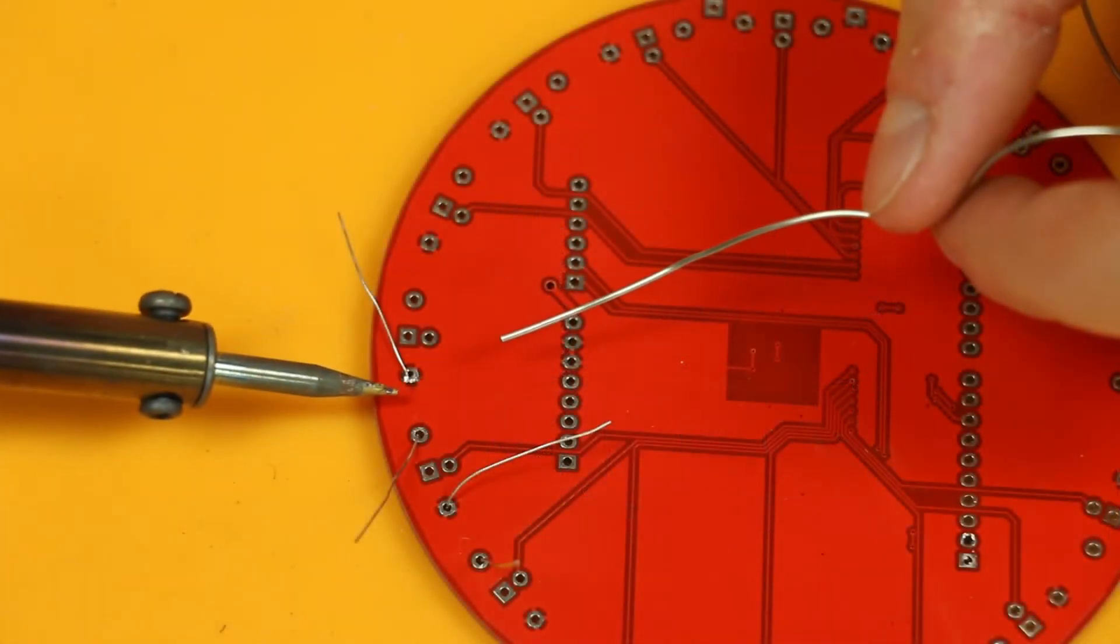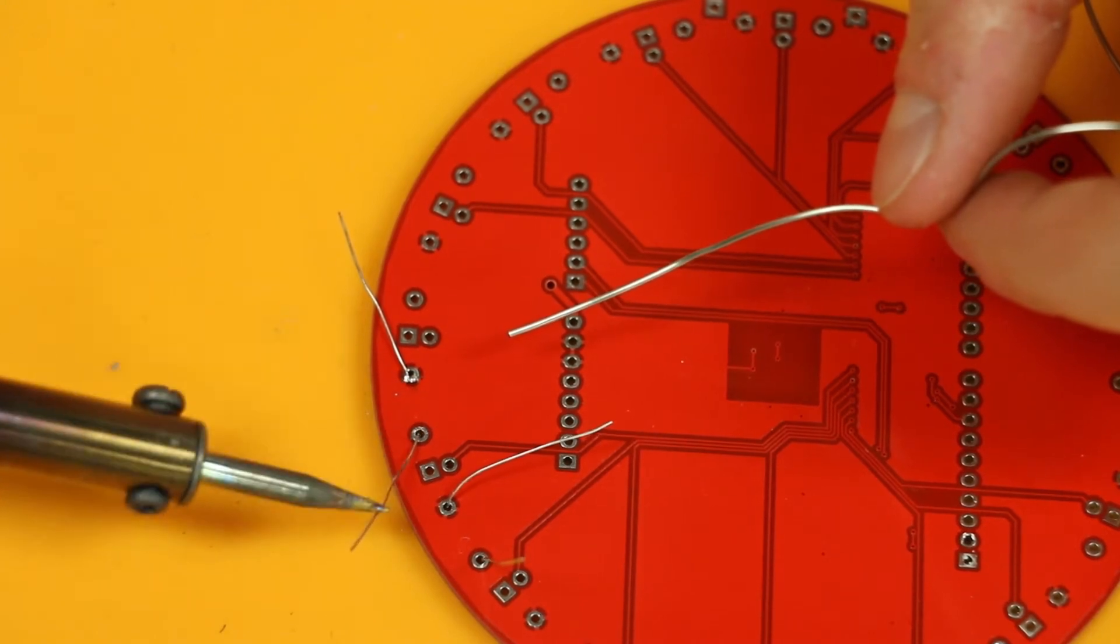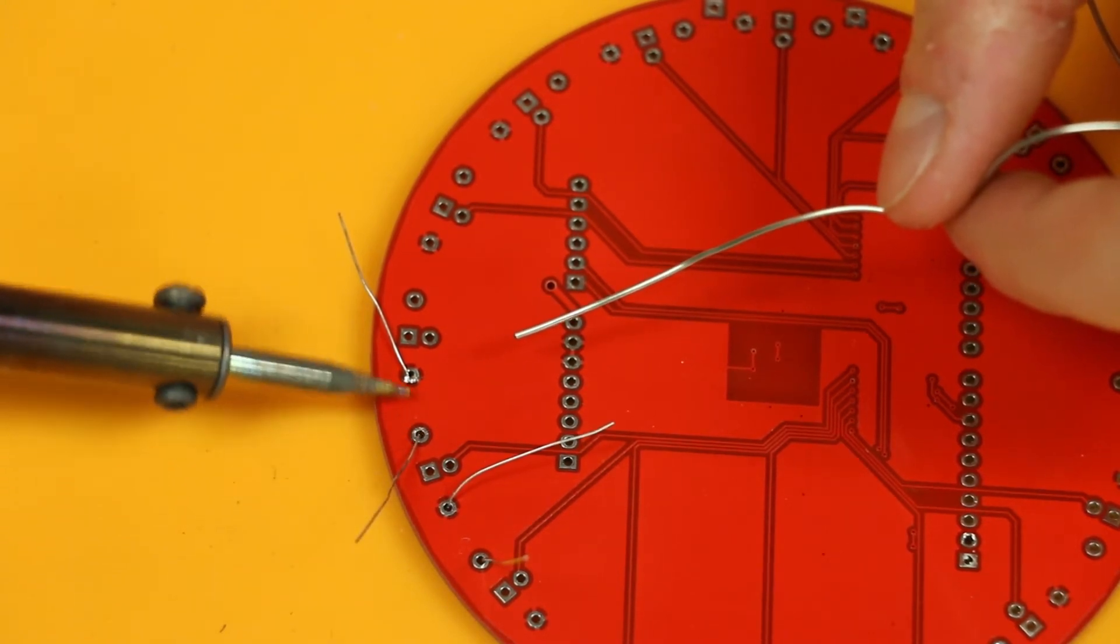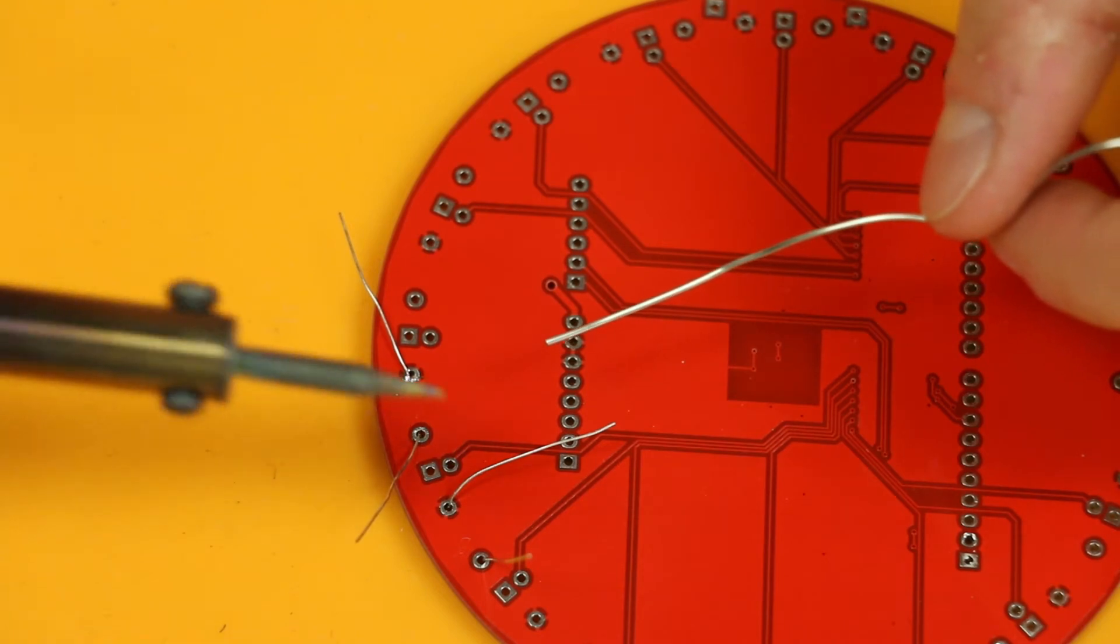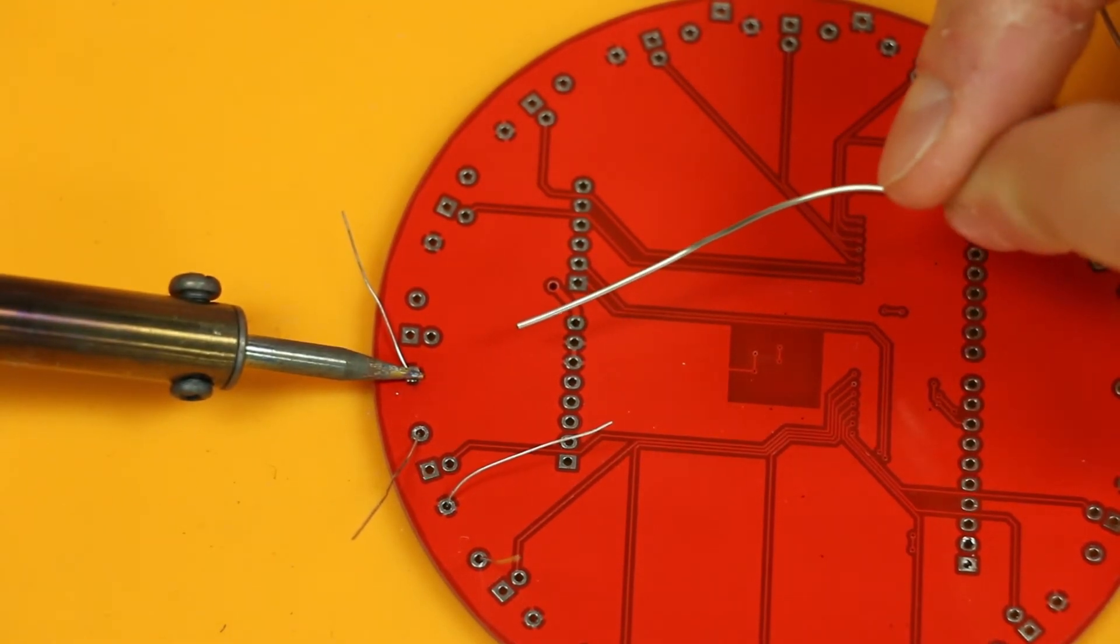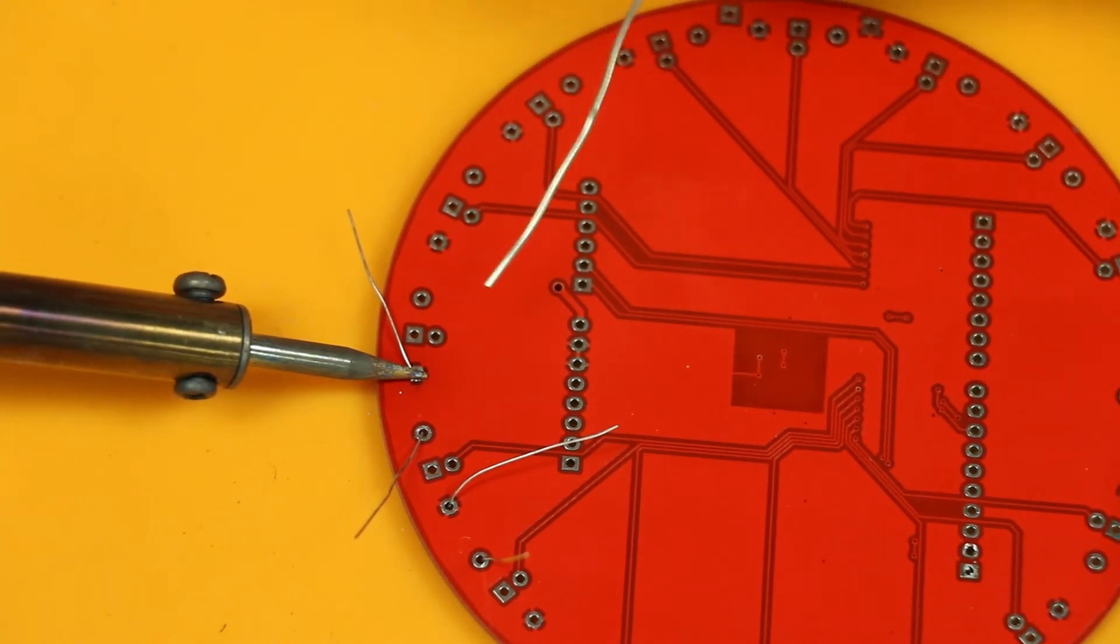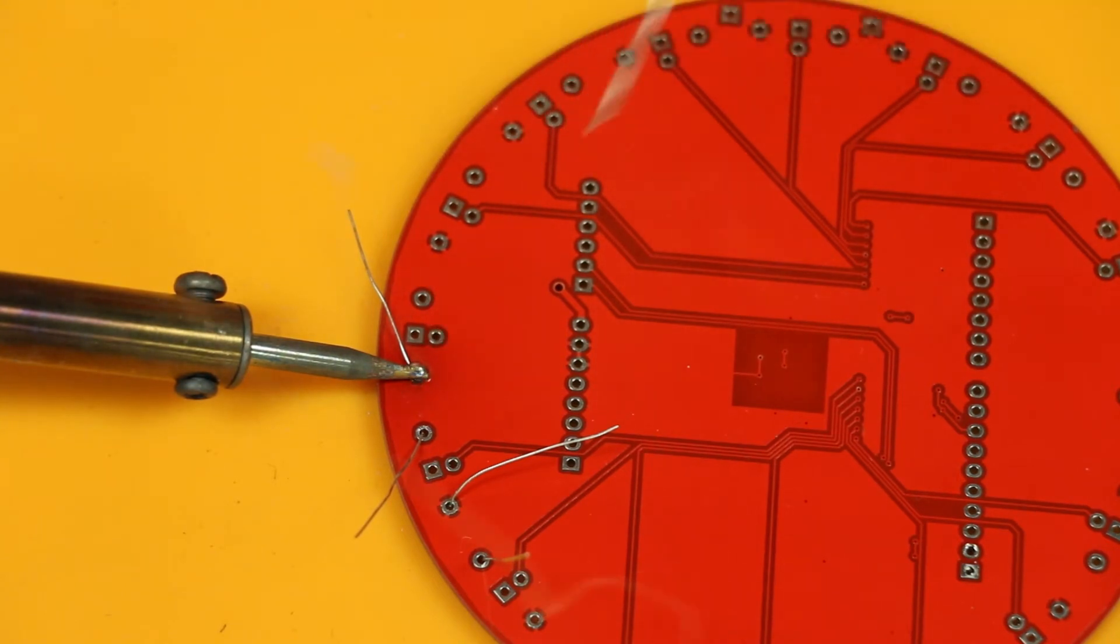So we'll be making two solder joints for this component. The holes that the leads from the component go through are called pads. And our first step is taking our soldering iron, putting it on the pads, holding it there for a couple of seconds so everything is heated up to the same temperature. And then pushing solder wire into the area.